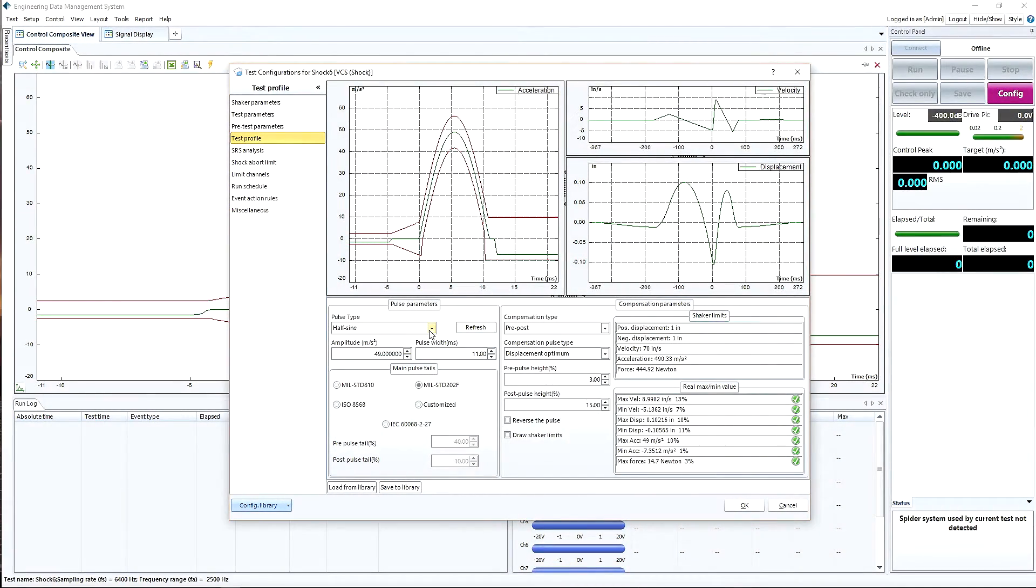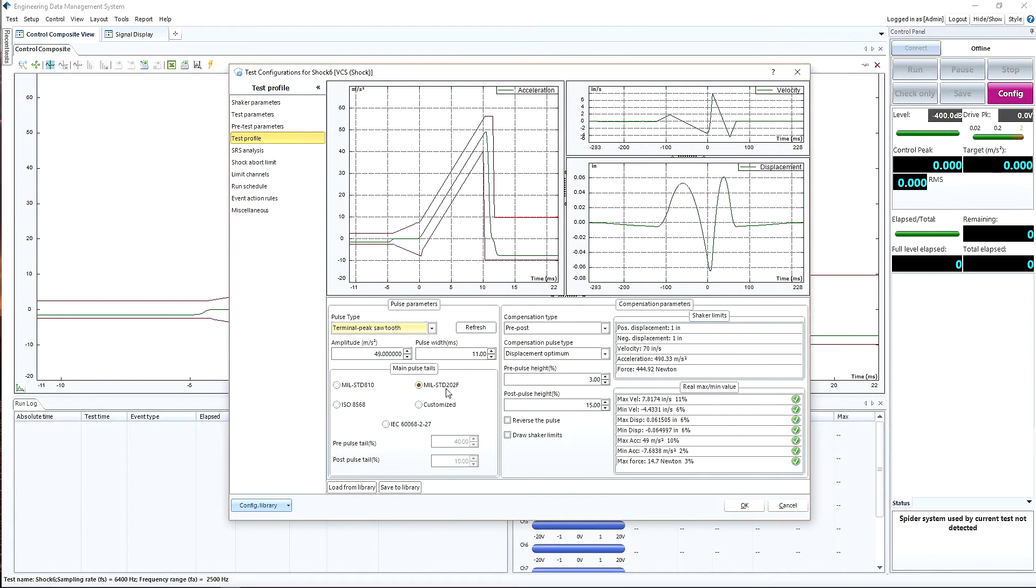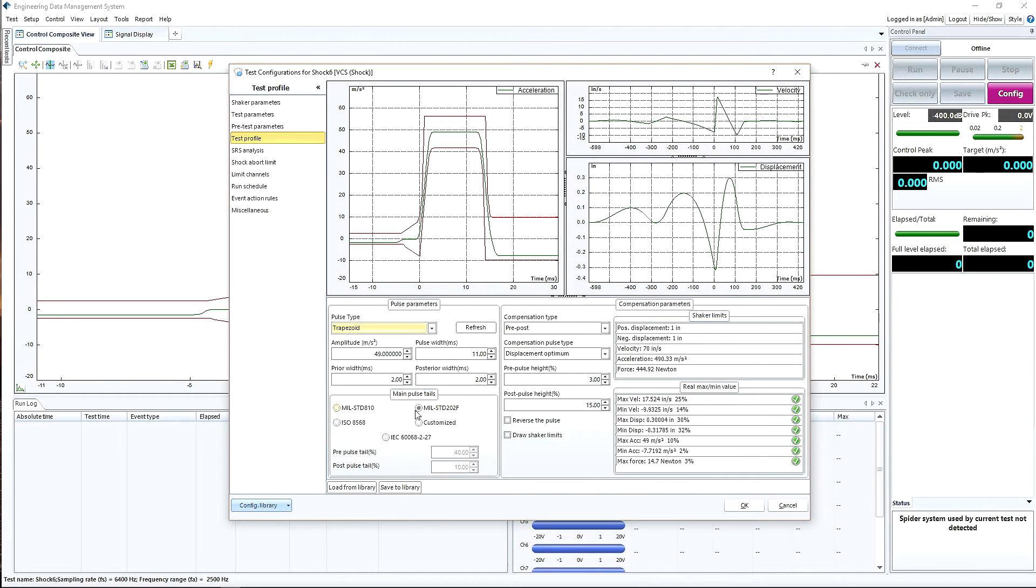This is a half-sine shock profile. It is the most typical pulse used. This pulse is called sawtooth. This pulse is an example of a trapezoidal shape.